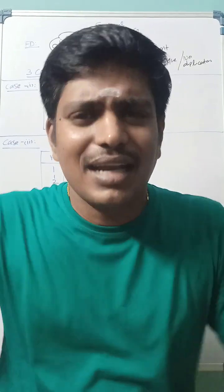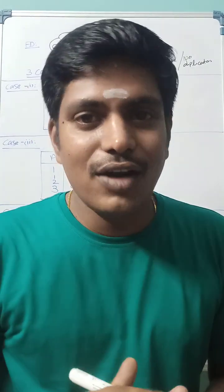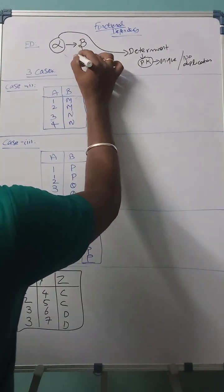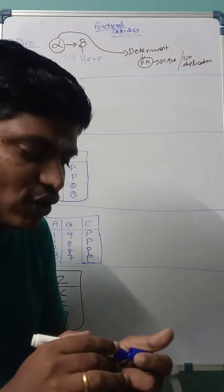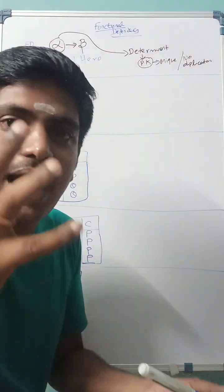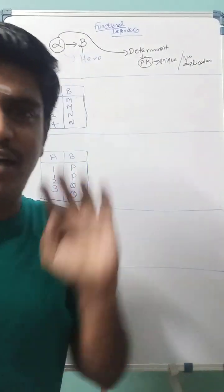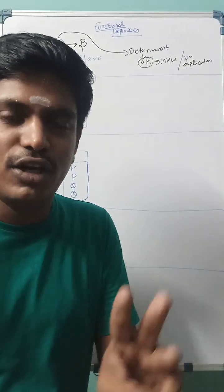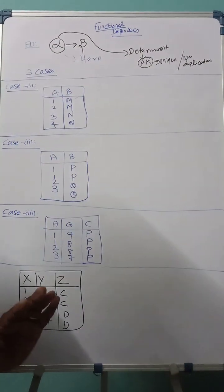So alpha is the hero of the concept, because it follows rules. Beta does not have any rule — he can do anything, so he is the villain. With that idea, I am dividing the entire functional dependency part into three different cases: Case 1, Case 2, and Case 3.